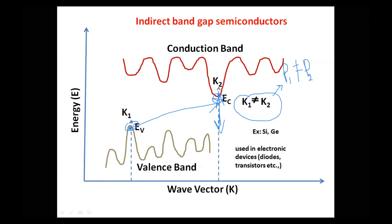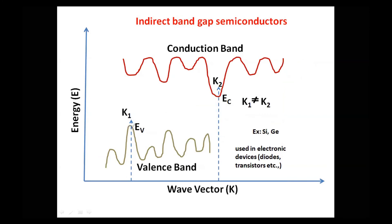Instead, the electron will go to some intermediate position — it will take an intermediate step. From this intermediate stage, it will then transition to the bottom of the conduction band. The transition of an electron from the top of the valence band to the bottom of the conduction band is thus taken indirectly. That is why these types of semiconductors are known as indirect bandgap semiconductors.